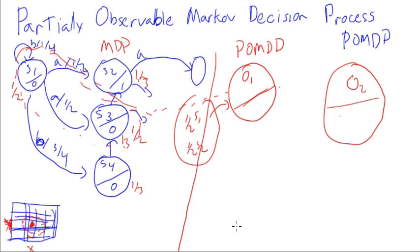Now when you're in this O1, remember that means you're either in S1 or S3. And O2 means you're in S2, S3, or S4—you could be in either one of those with certain probabilities.